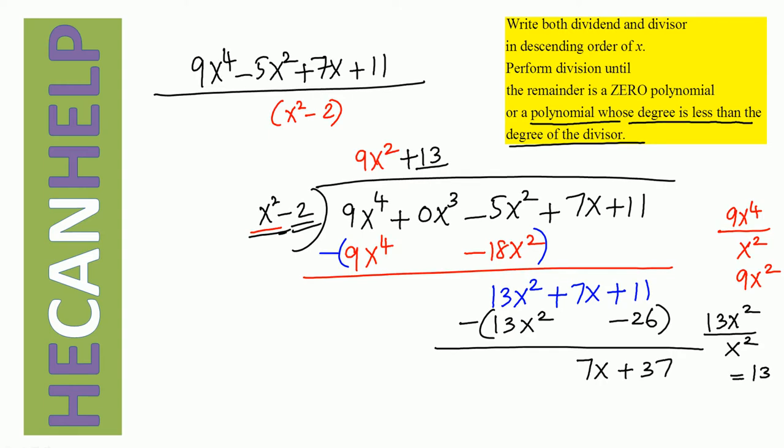What is our dividend? 9x to the fourth minus 5x squared plus 7x plus 11. What is our divisor? x squared minus 2. What is our quotient? 9x squared plus 13. And what is our remainder? 7x plus 37.